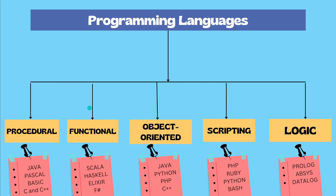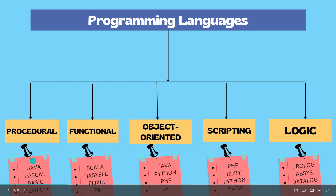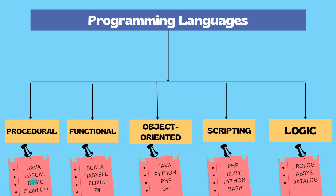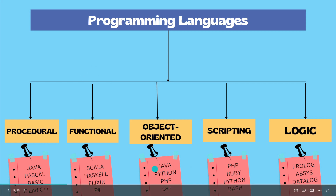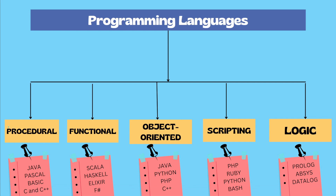There are multiple ways to classify programming languages. They can be classified as procedural, functional, object-oriented, scripting, and logic. We can also see examples for each of these classifications. Java can be considered as both an object-oriented programming language as well as a procedural programming language, as it shares features of both.